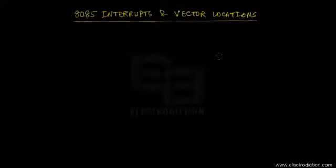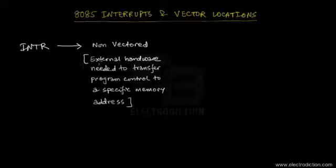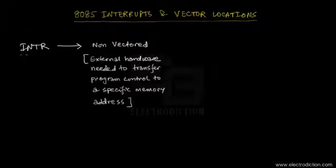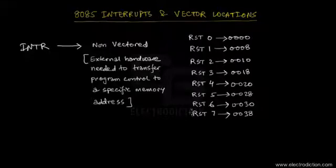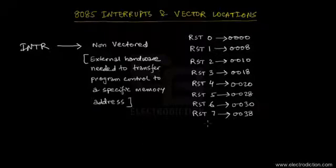Welcome to a tutorial on the 8085 interrupts and vector locations. In the previous tutorial, we discussed the INTR interrupt, which is non-vectored, meaning it always requires external hardware connected to the 8085 microprocessor. This external hardware determines the specific memory address to which program control is transferred on an interrupt request. There are eight different types of INTR interrupt requests, from RST 0 to RST 7.